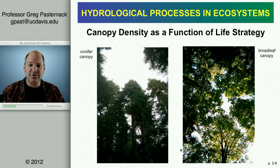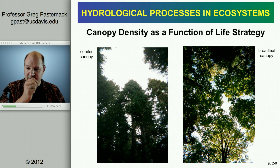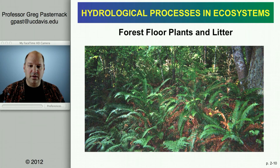Looking at specific examples: in a conifer forest the canopy is a lot less interlocking, whereas a broadleaf canopy is much more interlocking, though gaps are still present. Multiple canopy layers matter too — a photo from the Pacific Northwest shows a rich understory acting as a secondary layer capturing water that makes it through the conifer layer. Forest plants on the floor, as well as litter on the floor, can also hold a significant amount of moisture.